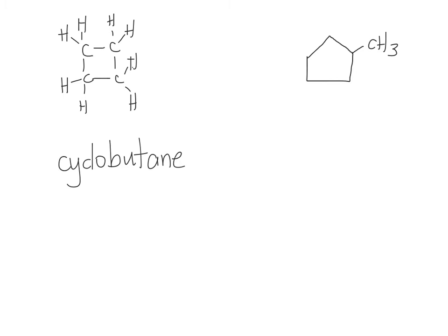So that would mean the ring is cyclopentane, and there's no double bonds, so it's 'ane'. And we have this side group over here, this methyl group. So this is methylcyclopentane. We don't need to put a prefix because there's only one carbon on the side group.